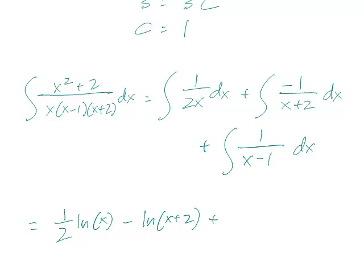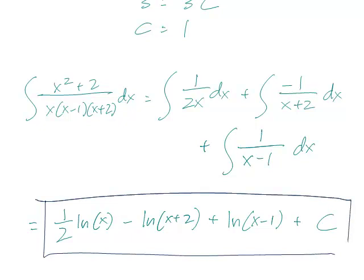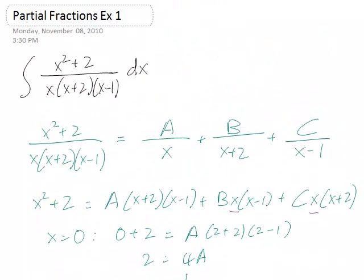And similarly, this is natural log of x minus 1 plus C. And so this is the antiderivative of x squared plus 2 over x times x plus 2 times x minus 1.